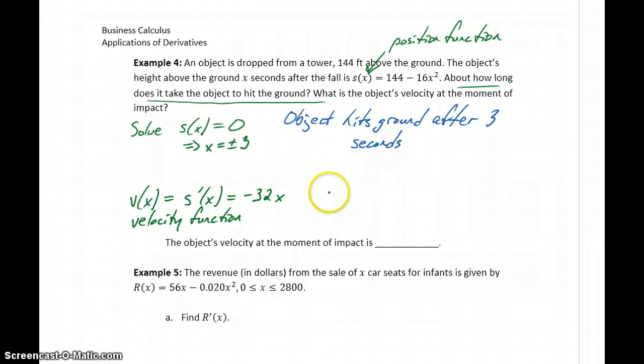Once we have the velocity function, then we can evaluate that velocity function at three. In Wolfram Alpha, you could ask it to evaluate negative 32x for x equals three. This is the same thing as evaluating the derivative of our position function at three, and this should give you a result of negative 96. The object's velocity at the moment of impact is negative 96 feet per second.